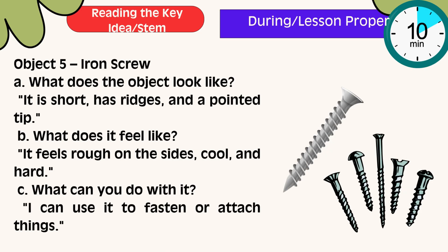Object 5: Iron screw. What does the object look like? It is short, has ridges, and a pointed tip. What does it feel like? It feels rough on the sides, cool, and hard. What can you do with it? I can use it to fasten or attach things.